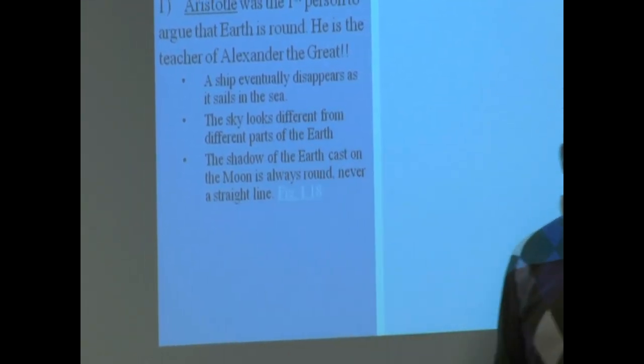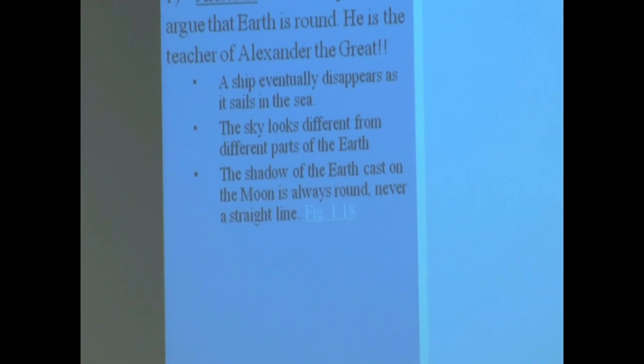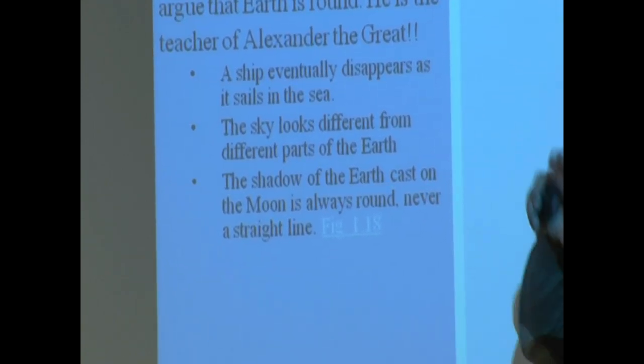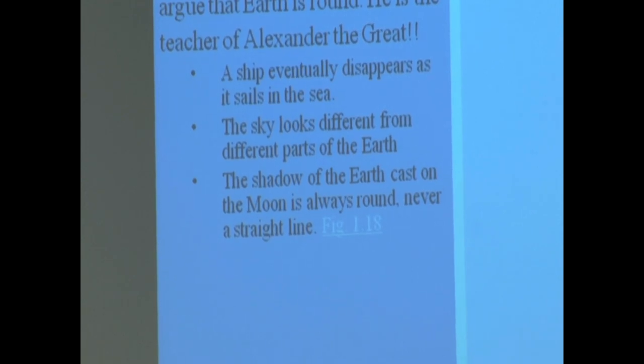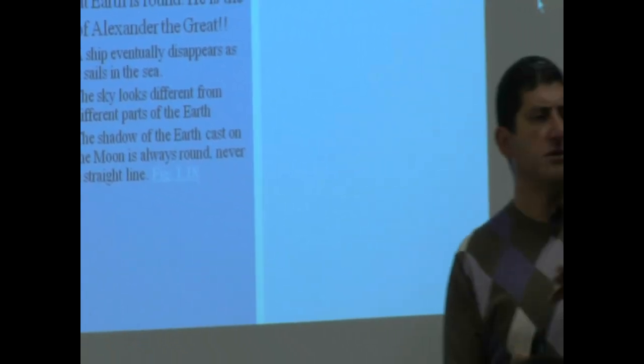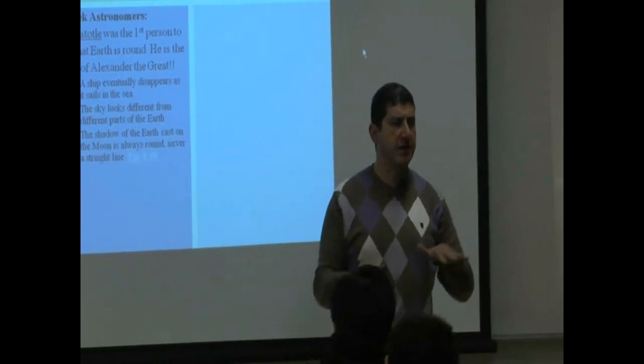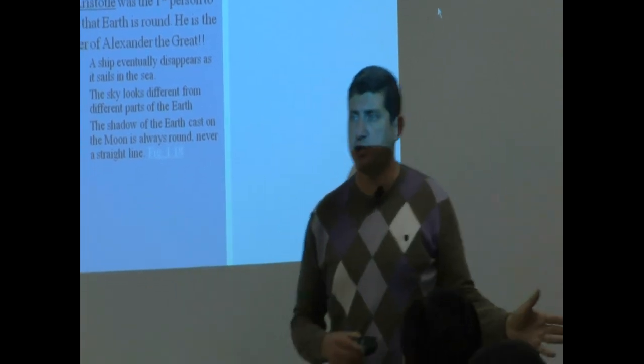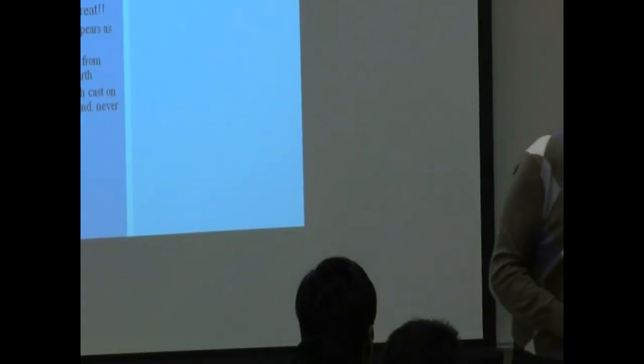These are the arguments he used, pretty clever arguments, to argue that the earth is round. He said a ship eventually disappears as it sails in the sea. So as he sailed in ships and went to different places, you notice that the sky looked different, the positions of stars changed in the sky. It's a pretty clever argument.